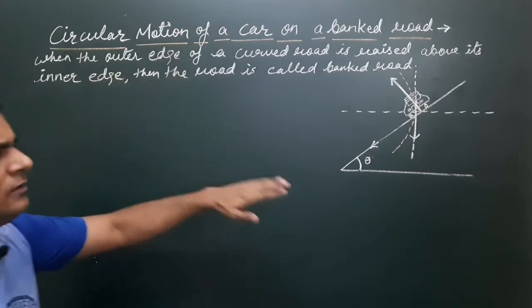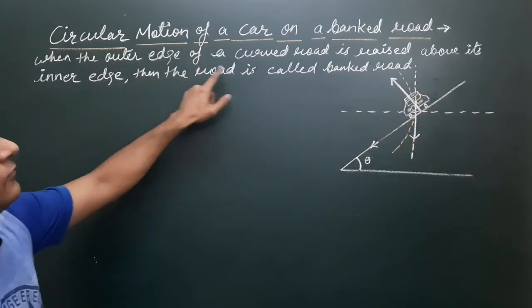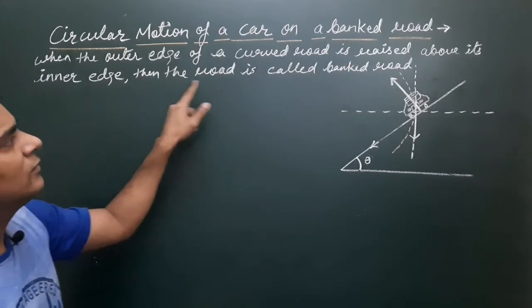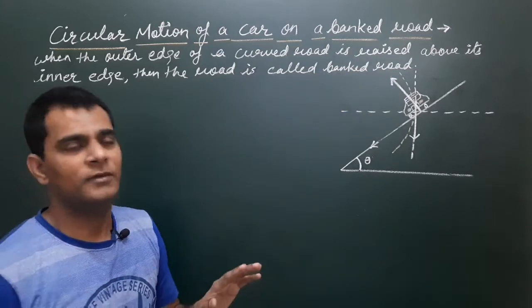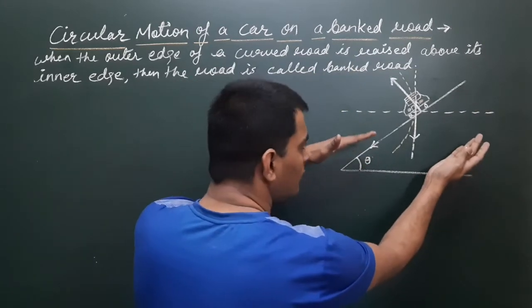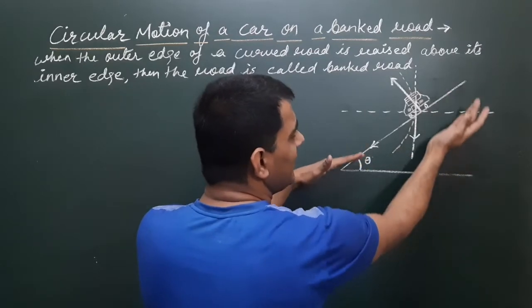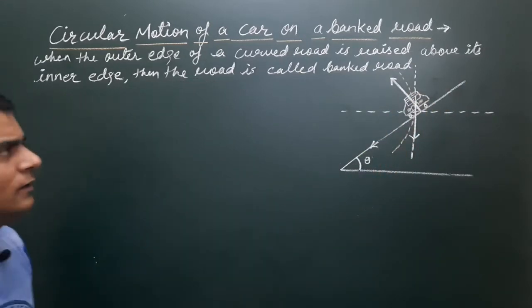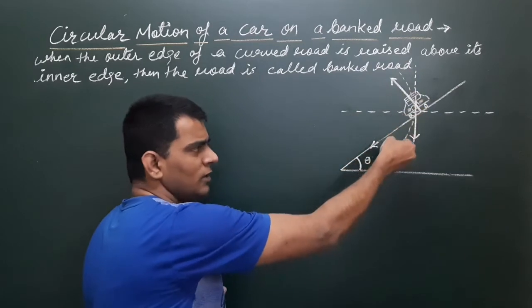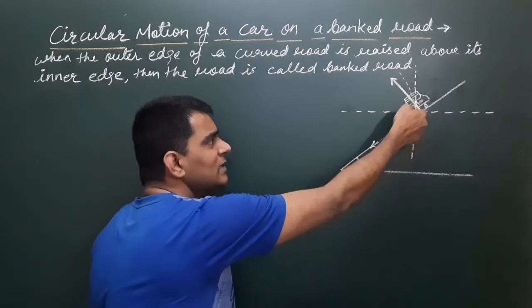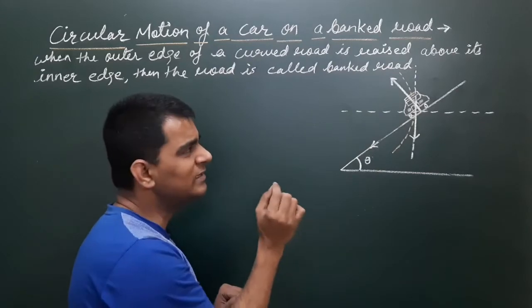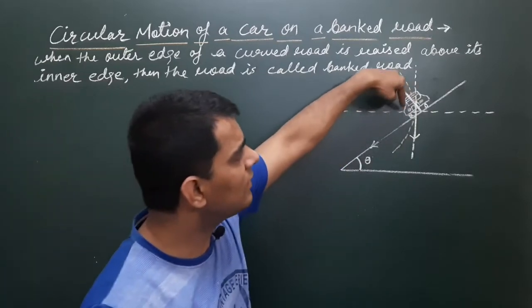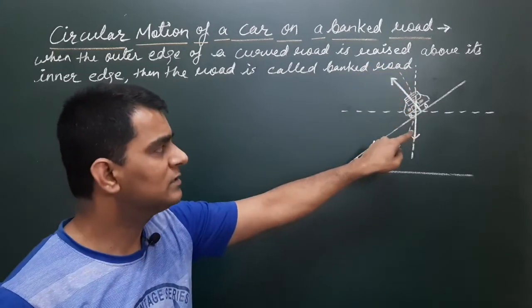When the outer edge of a curved road is raised above its lower edge or inner edge, then the road is called the banked road. This is the outer edge and this is the inner edge. We have raised the outer edge above the lower edge. This is the curved road — here I show this circular arc. The center is in this direction. When the car turns around, we talk about the instant — this is the car which is taking the circular turn on this banked road.